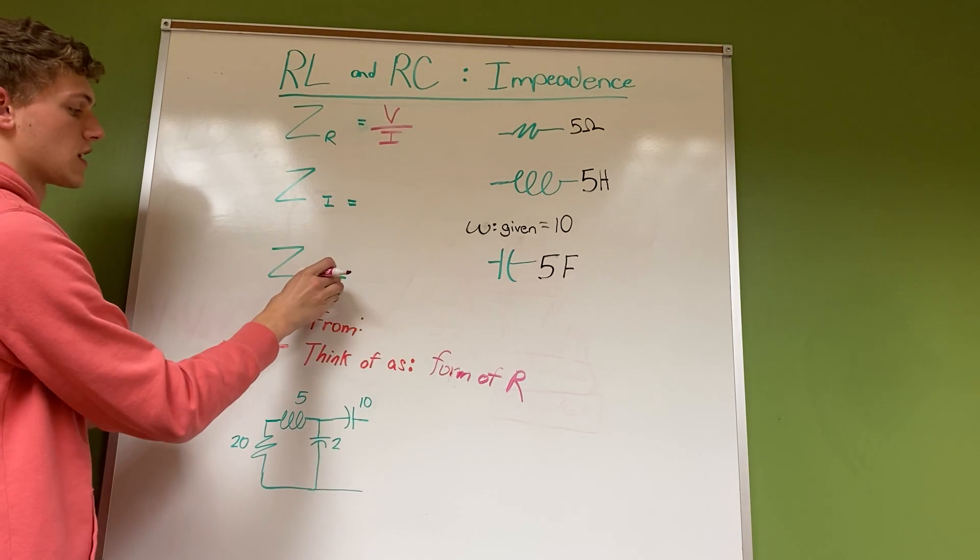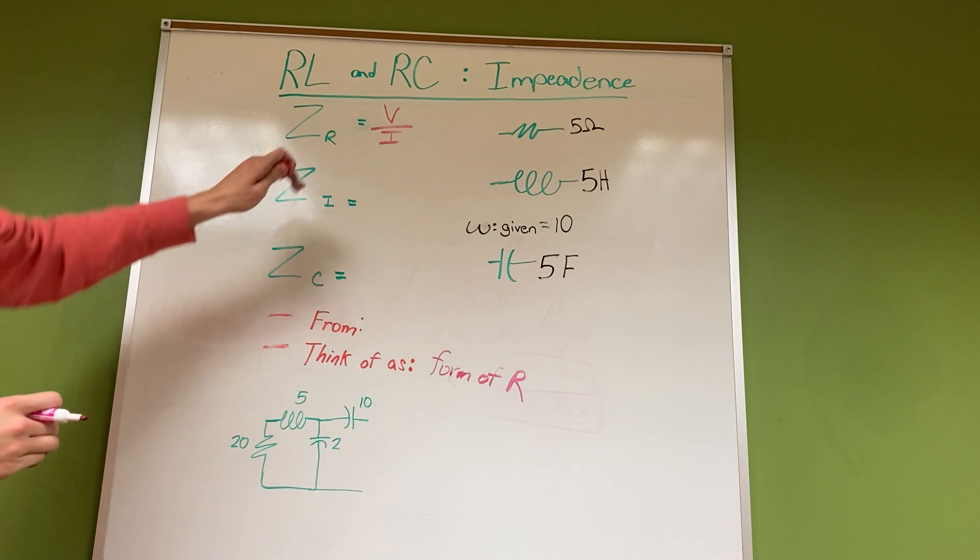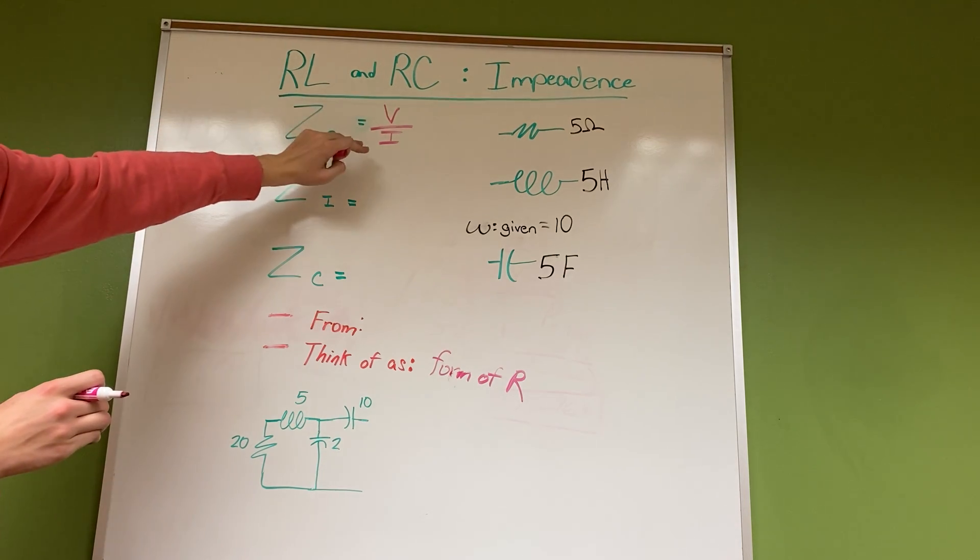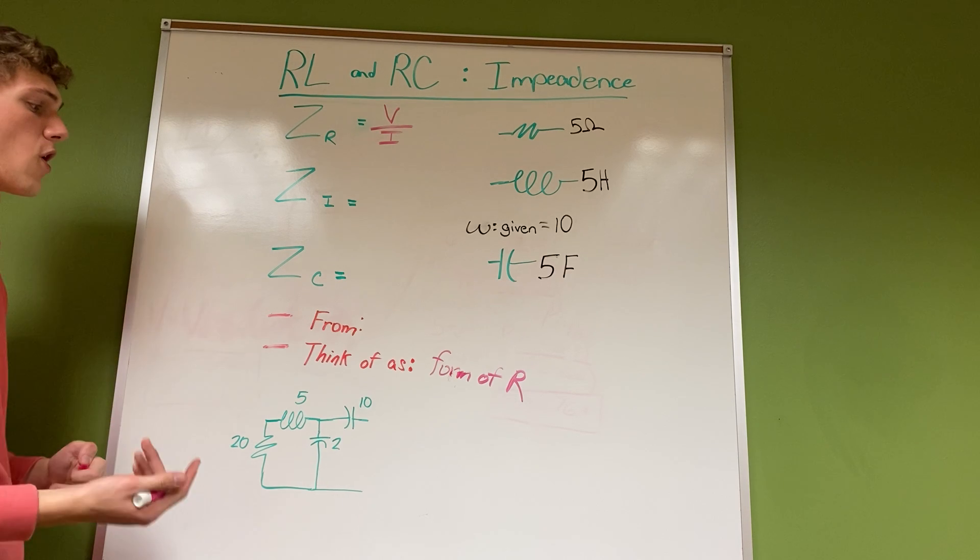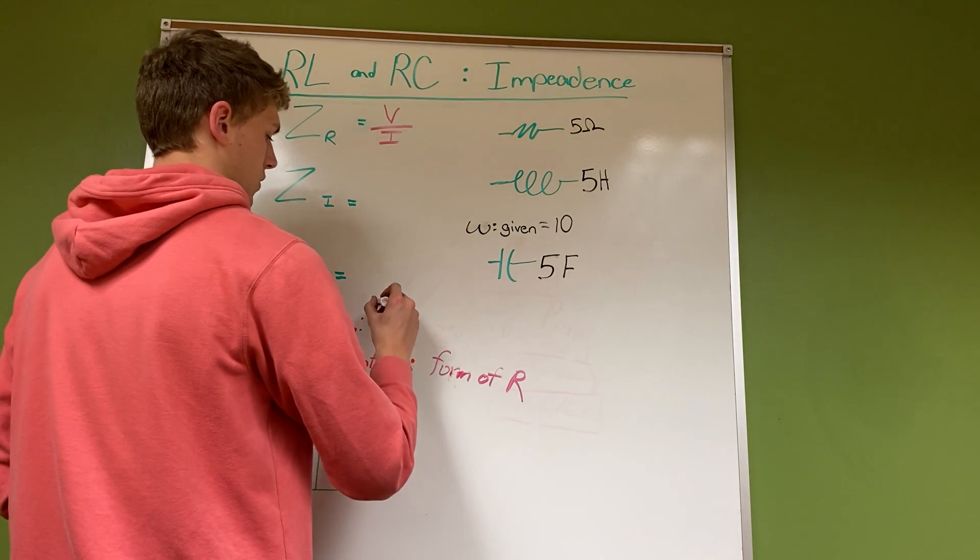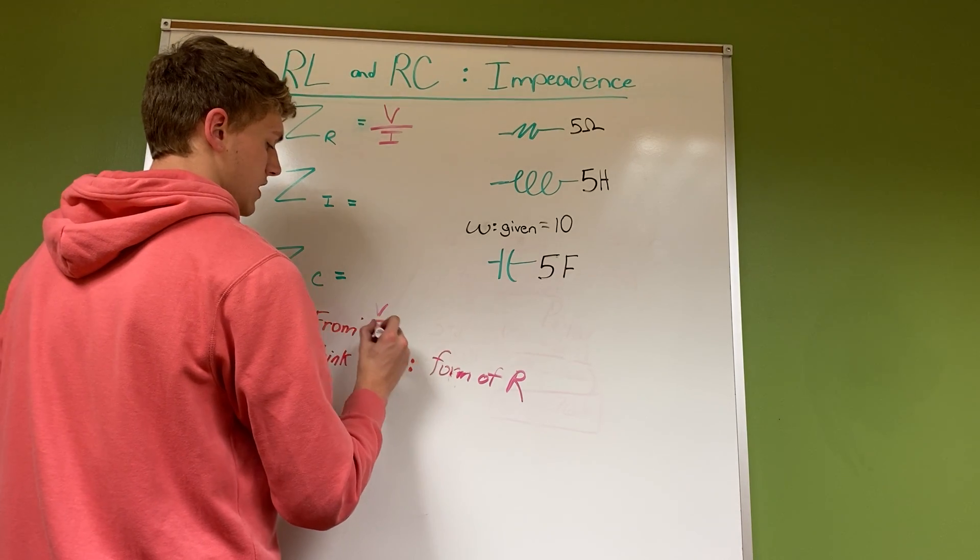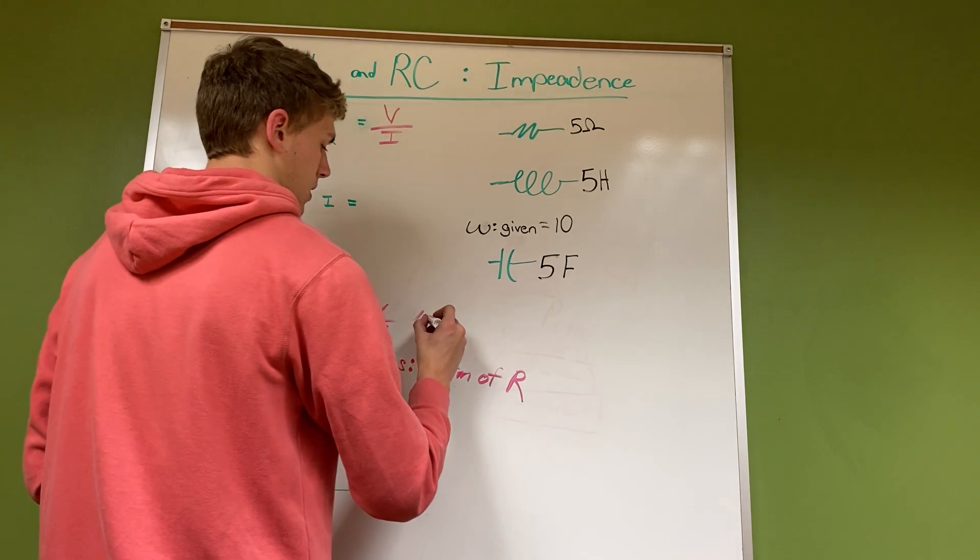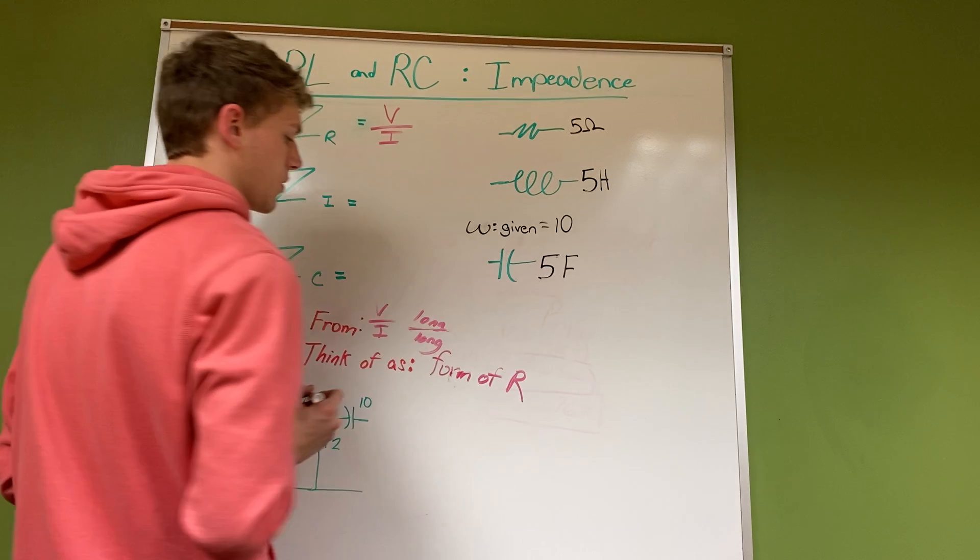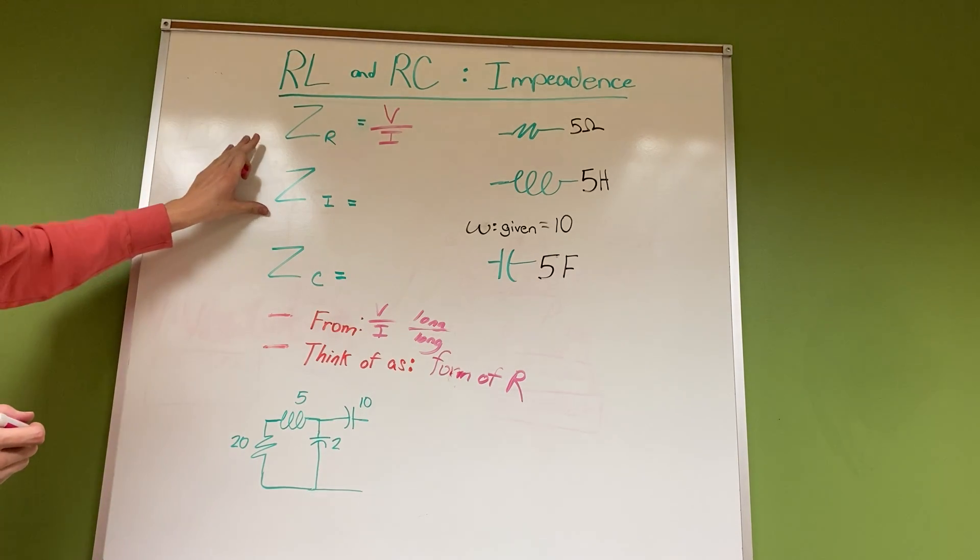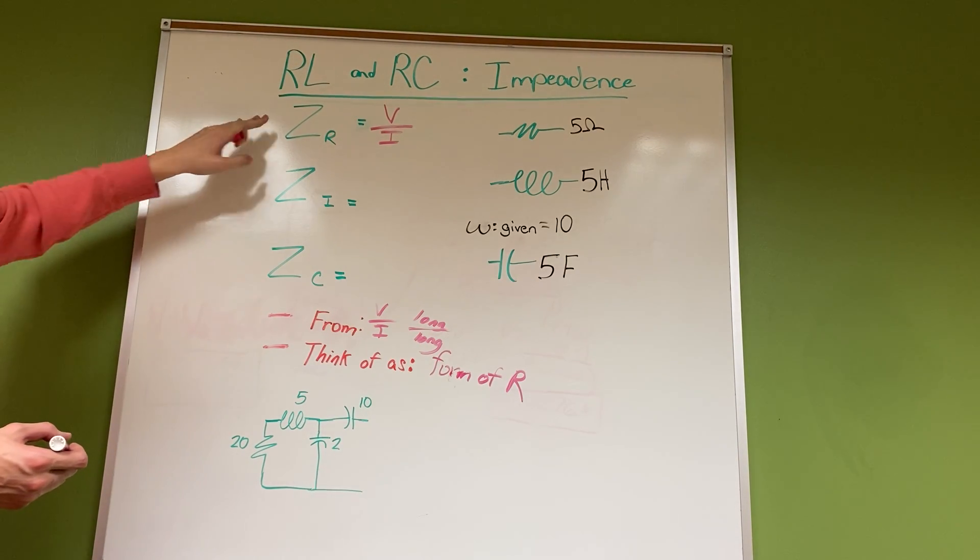What this comes from is the same V over I equation used for inductors and capacitors, but the way that we find voltage and current with inductors and capacitors is a much longer equation. It's basically the same V over I where we get it from, but it's very long, so that's why we simplify it.